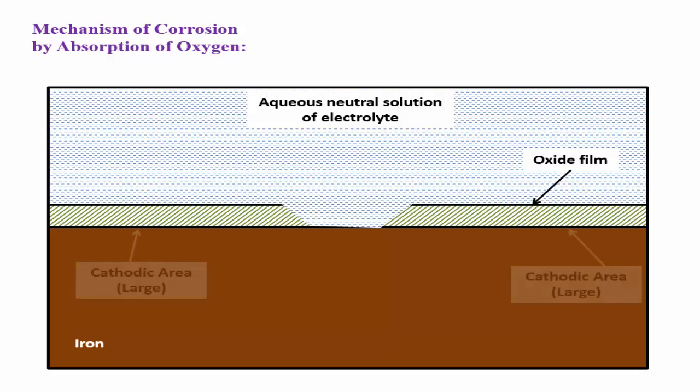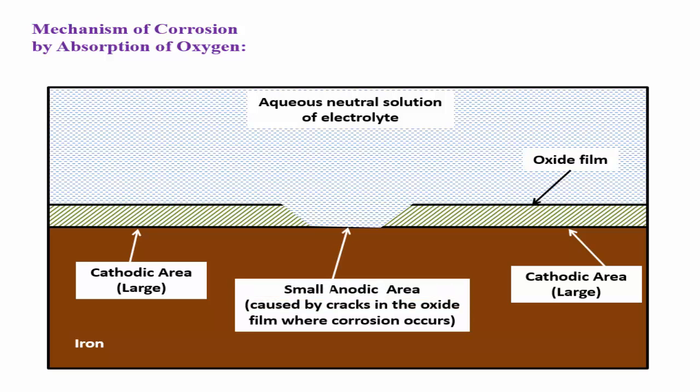The area covered with oxide film acts as cathode, creating a large cathodic area. The area exposed to the environment acts as anode, creating a small anodic area caused by cracks in the oxide film. This is where corrosion occurs.